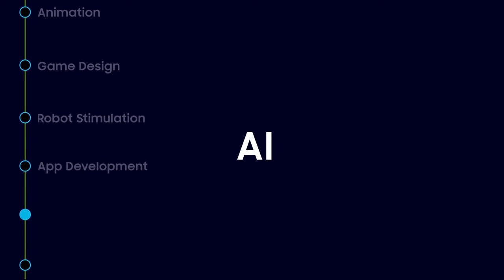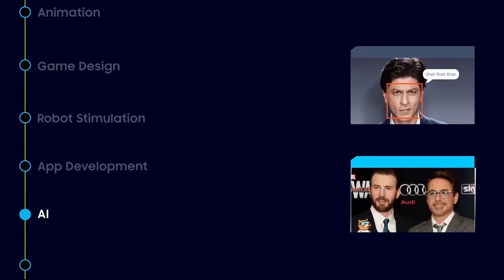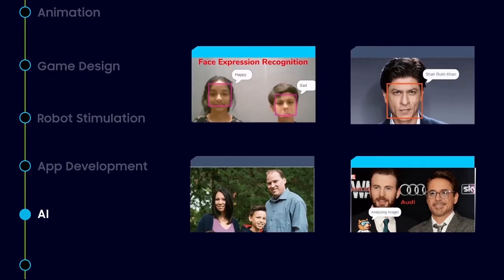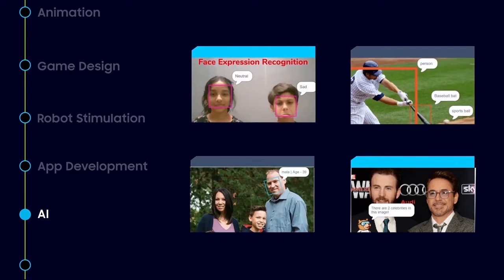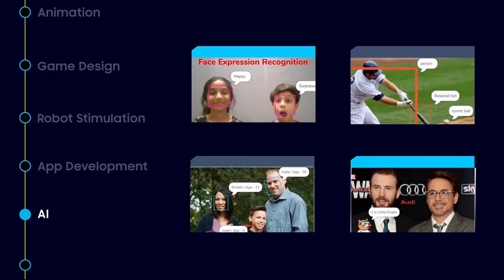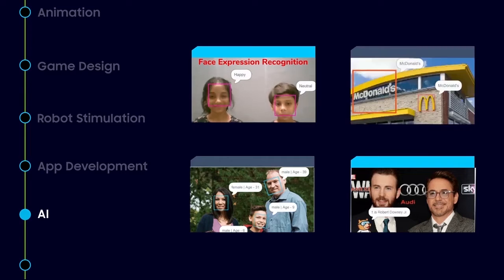The AI course lets children build elements that make a smartphone smart, like image processing in mobile phones and letting computers feel human emotions.